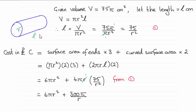Now we weren't given the length, so I've decided to call it L. And we need to figure out what L is in terms of R. And we can do that just simply by knowing that the volume which we're given was 75π centimeter cubed. And the volume would be the area of the end, πR² times that length L. So we've got V equals πR²L.